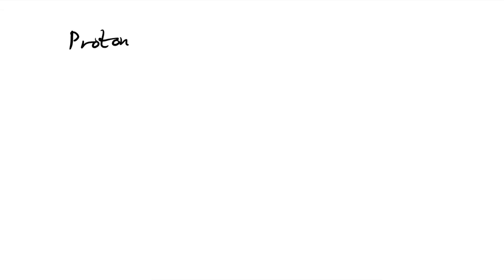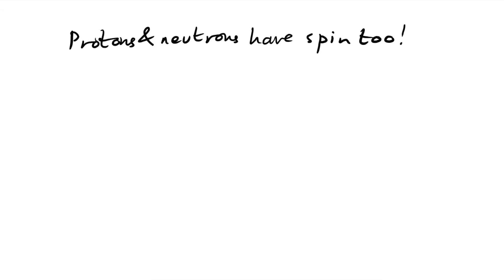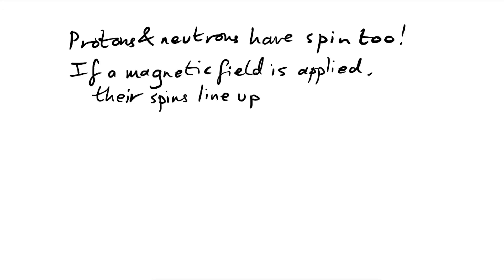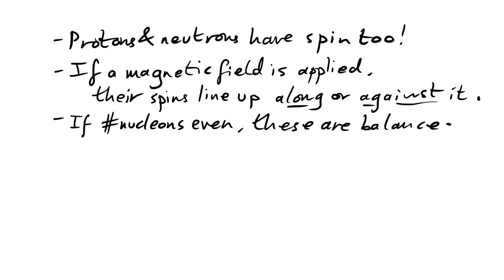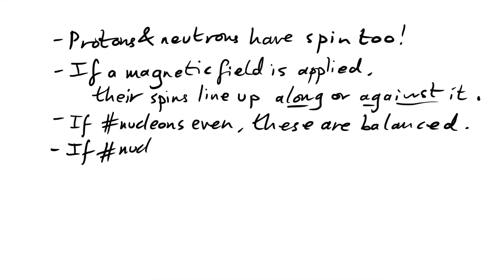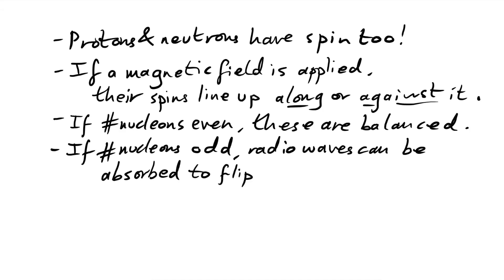Protons and neutrons have spin too. They're all spinning in different directions, but what we can do is make their spins line up. They can do that two ways: the spin can either line up along the magnetic field or against the magnetic field. If the number of nucleons is even, these are balanced — there are as many nucleons lined up along the field as there are against it. However, if the number of nucleons is odd, radio waves can be absorbed to flip the spin of a nucleon.